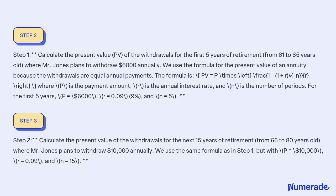Step 2: Calculate the present value of the withdrawals for the next 15 years of retirement, from 66 to 80 years old, where Mr. Jones plans to withdraw $10,000 annually. We use the same formula as in Step 1 but with P = $10,000, R = 0.09, and N = 15.